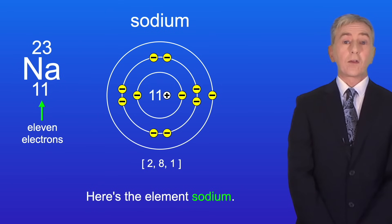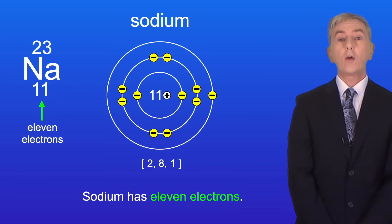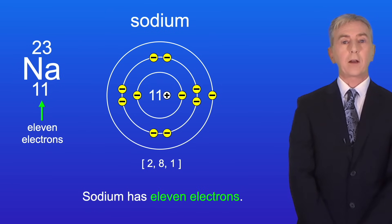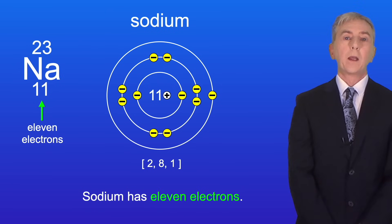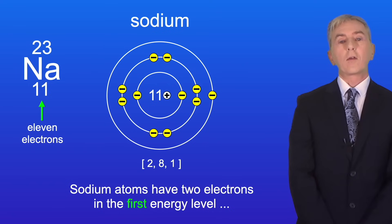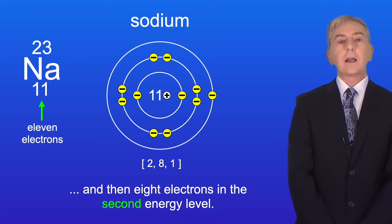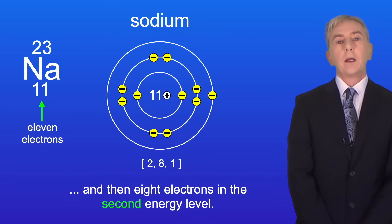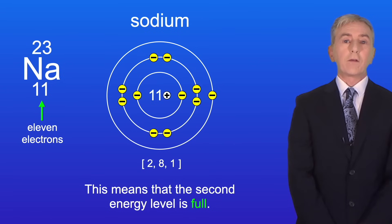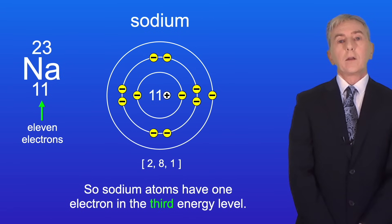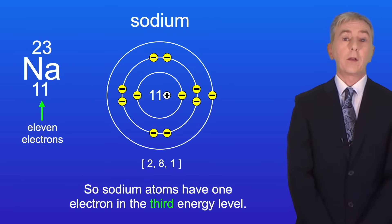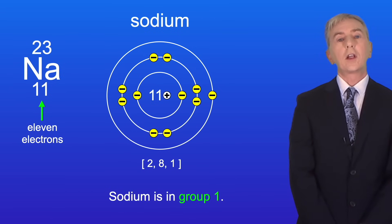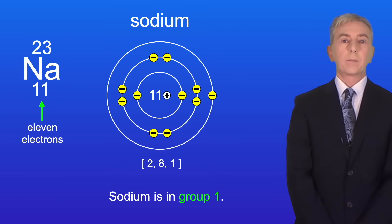Here is the element sodium. Sodium has 11 electrons. Sodium atoms have two electrons in the first energy level and eight electrons in the second energy level, making the second energy level full. So sodium atoms have one electron in the third energy level, and sodium is in group one.